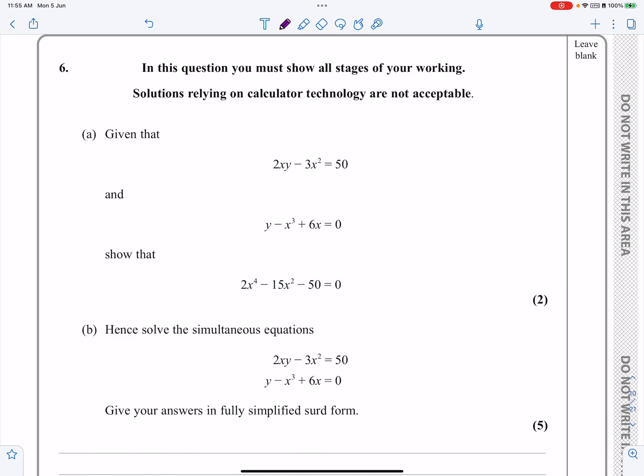Number 6. Given that 2xy minus 3x squared equals 50, and y equals minus x cubed plus 6x, so given that information, can we show that? Yeah, hopefully I would have thought that's relatively straightforward. What I'm going to do is just quickly inspect these two, and it makes sense to me to get y equals from this one and then plug it in there for that one.